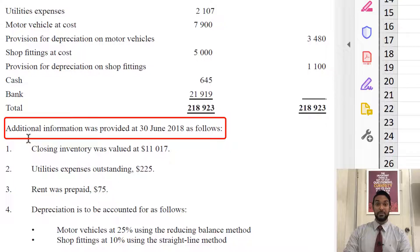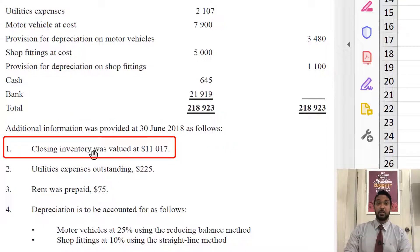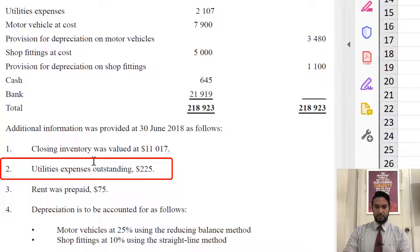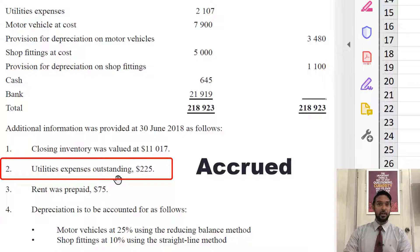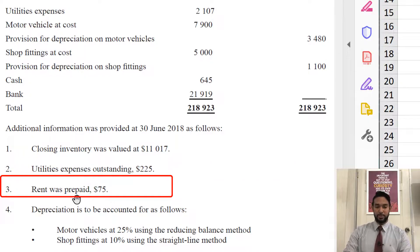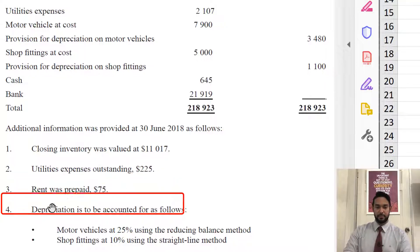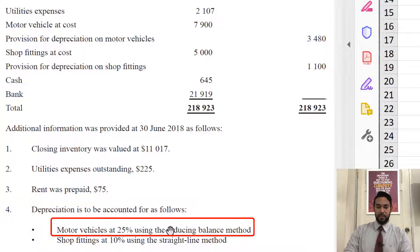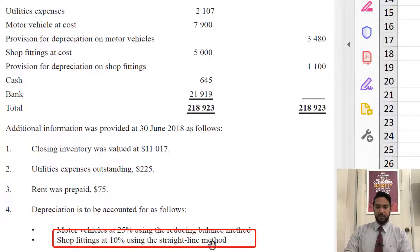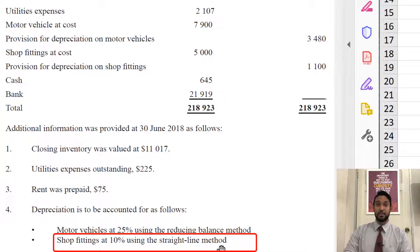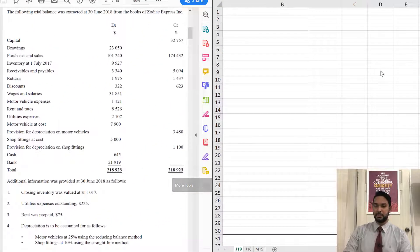So we have closing inventory — that's closing stock. We have utilities outstanding. Outstanding is a keyword meaning accrued, so we know what to do with that. Rent was prepaid — that's another keyword, meaning prepaid, so we have to adjust rent for that. And we have some information about the depreciation: one asset being depreciated via the reducing balance method and another being depreciated using the straight line method. Let's see if we remember how to do this.